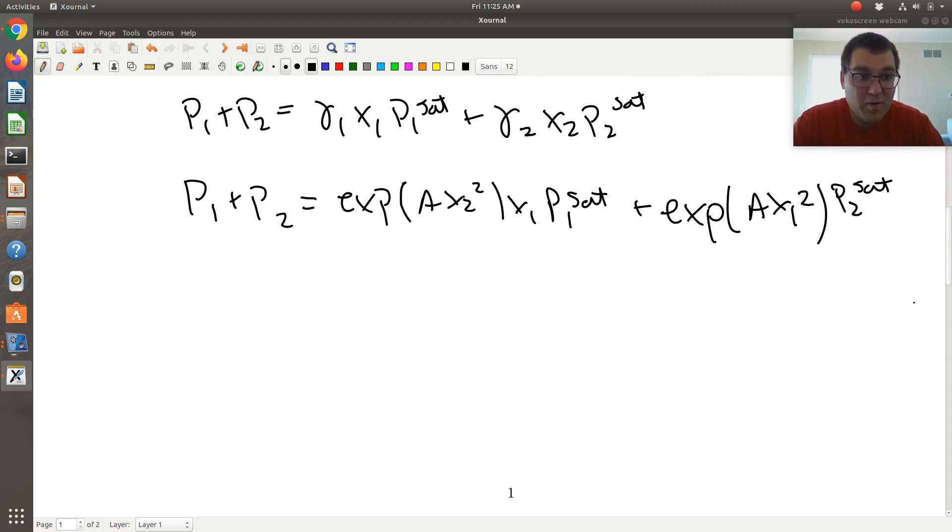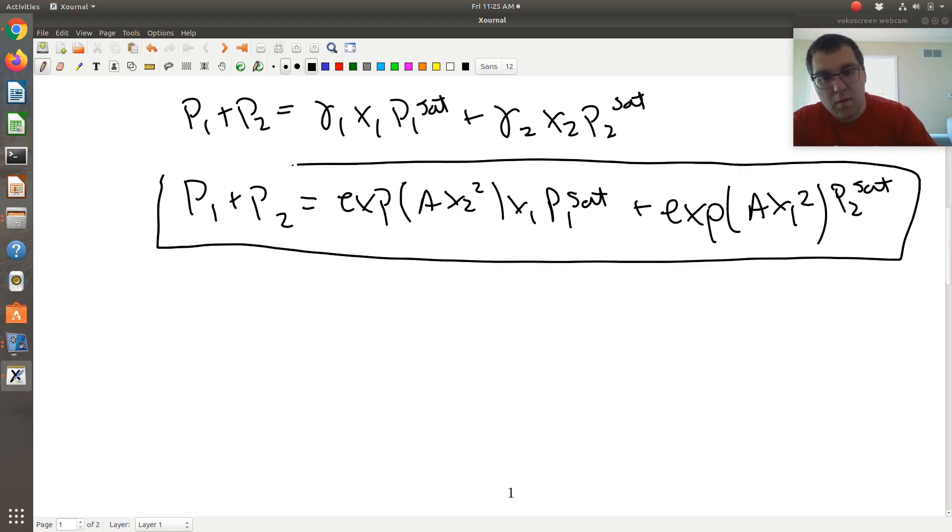So option one, the first route I could go is I can use this expression. Along with, I should also plug in X2 is equal to 1 minus X1. All right, so this would give me a system of two equations with two unknowns in theory. And why I say that is you're given X1, we're given P1 sat. We know X1, we know P2 sat.